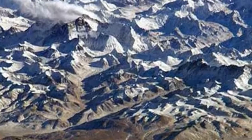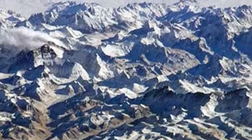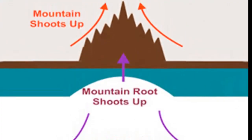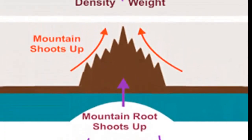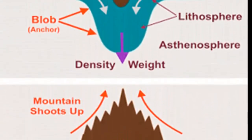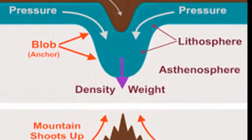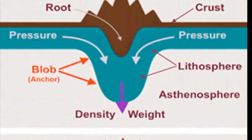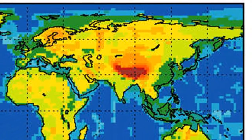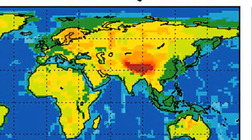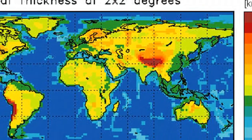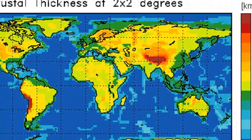Hence, Airey's model explained why the plumbob was deflected much less than expected. Seismological and gravitational studies have confirmed the existence of crustal roots under some mountain ranges. The thickness of continental crust is normally about 20 miles, but crustal thicknesses exceeding 40 miles have been determined for some mountain belts.